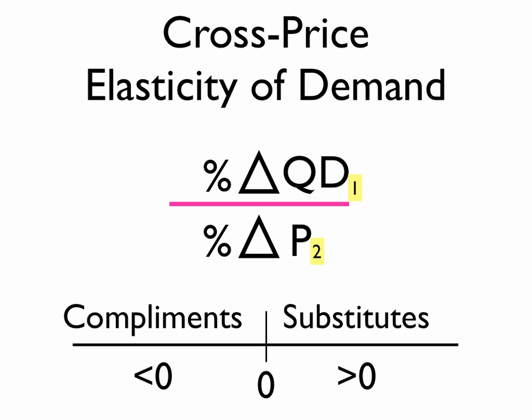To summarize: cross-price elasticity of demand is the percentage change in quantity demanded of one product divided by the percentage change in the price of another product. If the value is less than zero, the products are complements. If it's greater than zero, they're substitutes. If the value is zero, the products are considered unrelated to each other.